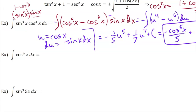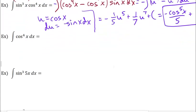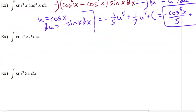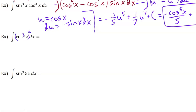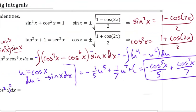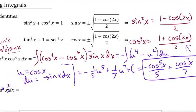However, here I have an even exponent, and I actually don't have any sines at all. So now I'm going to end up using my half-angle identity to rewrite this. And I know that this is the same thing as saying cosine squared and then that whole quantity squared, so I'm going to rewrite the cosine squared on the inside using the half-angle identity.